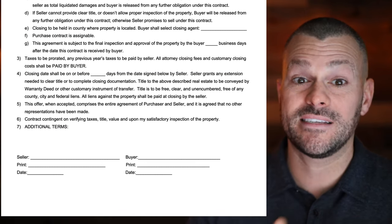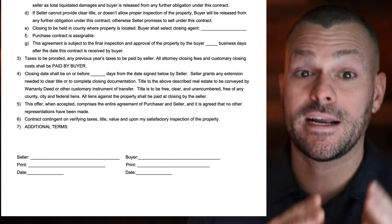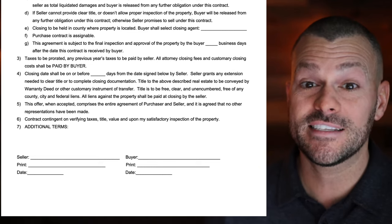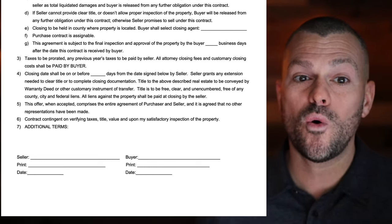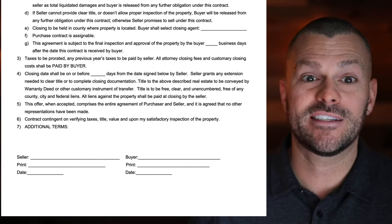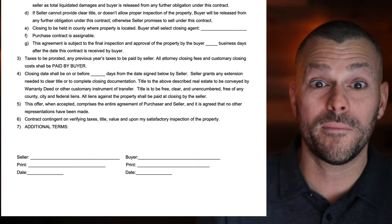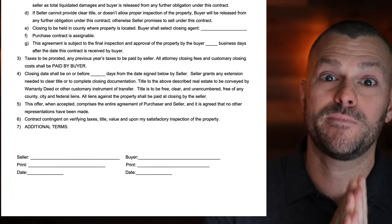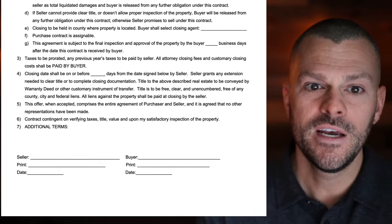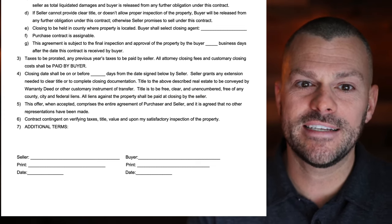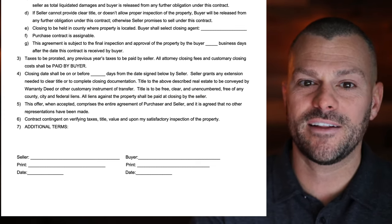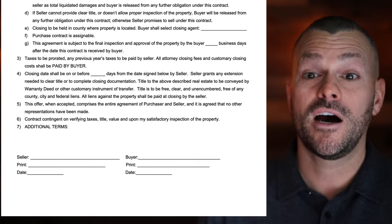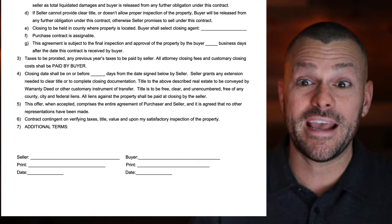Number five: the offer when accepted comprises the entire agreement of purchase and seller, and it is agreed that no other representations have been made. Basically saying: this is it, it's simple, it's one page, and everything we are talking about and agreeing to is on this piece of paper. Number six: contract contingent on verifying taxes, title, and value upon my satisfactory inspection of the property. And this is one of the CYA clauses — this contract is contingent on verifying taxes, title, and the value.